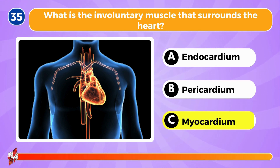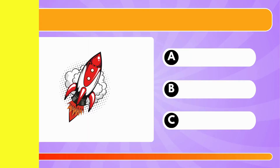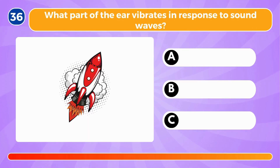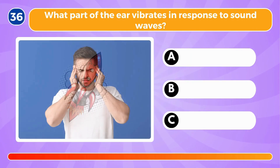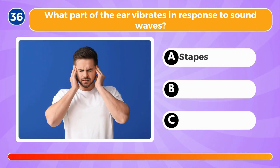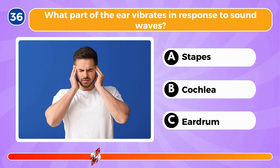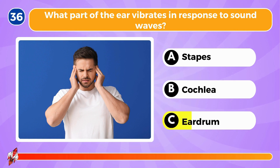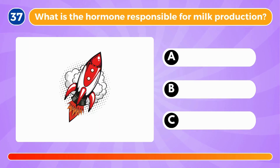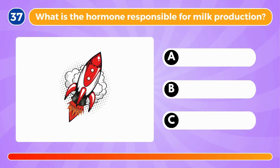What is the involuntary muscle that surrounds the heart? It's the myocardium. What part of the ear vibrates in response to sound waves? It's the eardrum.